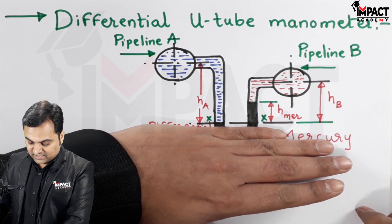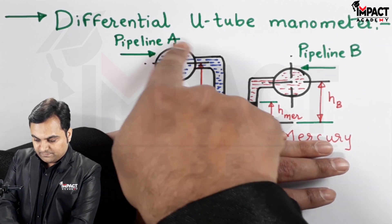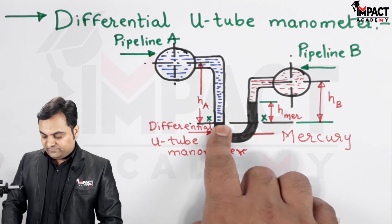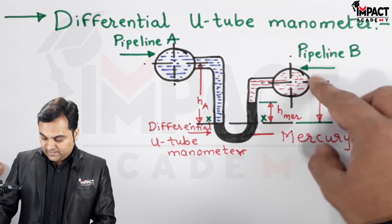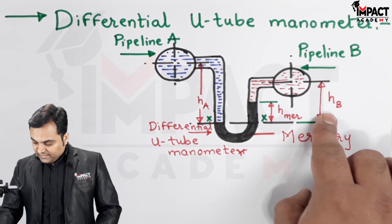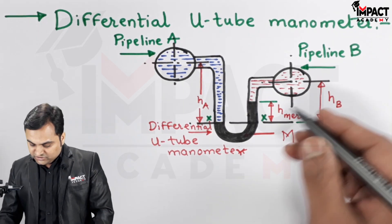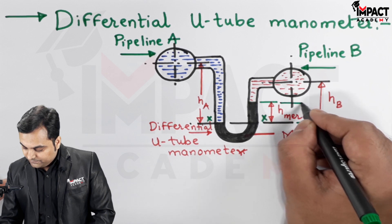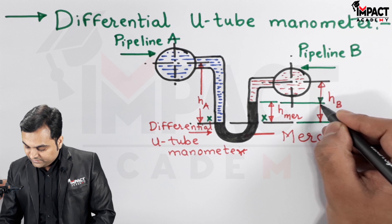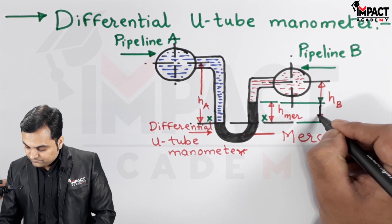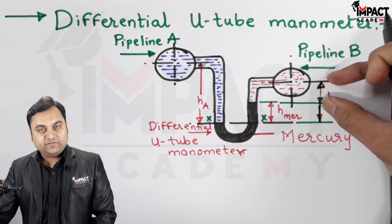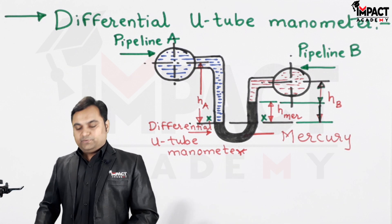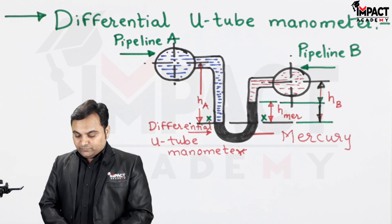Here is section XX, over which we balance the intensity of pressure. Above section XX in the left limb, we have the pressure inside pipeline A plus the height HA, which exerts pressure on section XX. On the right side we have pipeline B, the height of mercury HM, and height HB — which is only up to just above the mercury level, not to the bottom, since mercury occupies the bottom portion.